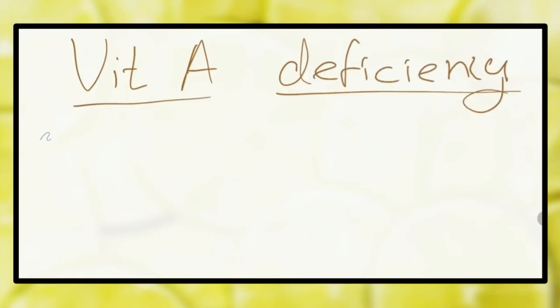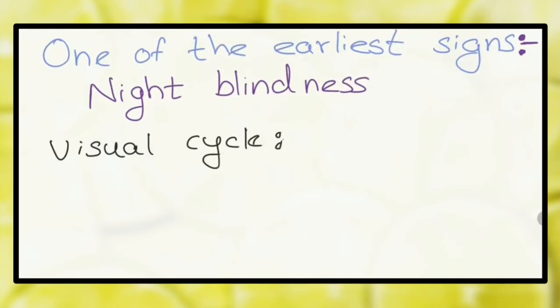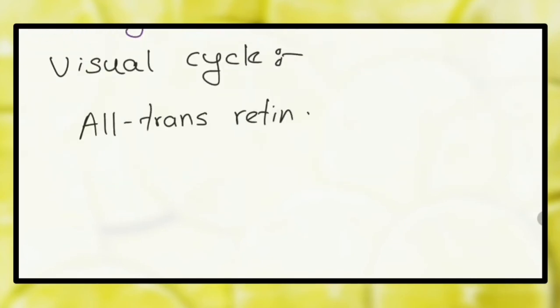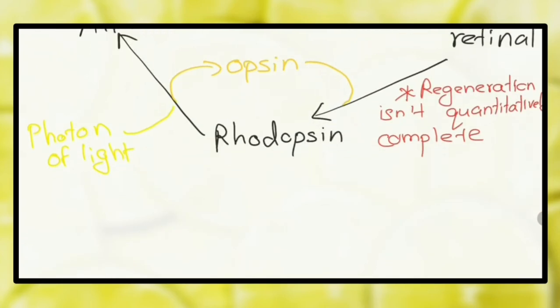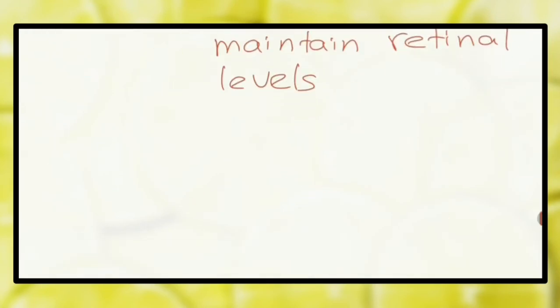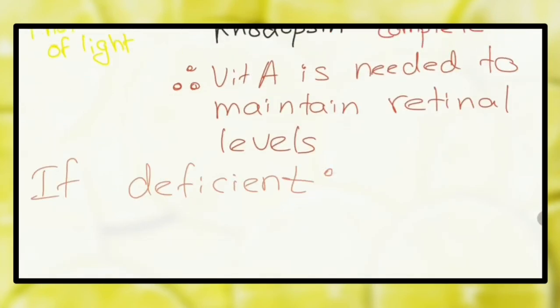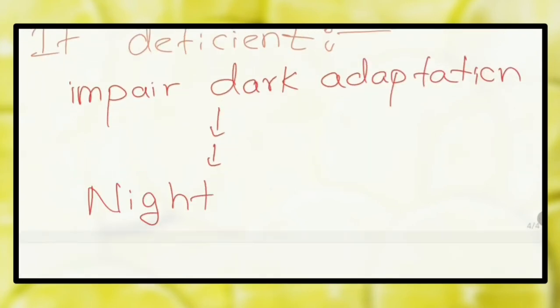Tell me the earliest sign that you can see in vitamin A deficiency. Night blindness. Tell me how night blindness occurs in this condition. Rhodopsin in the cells of retina is responsible for the vision in dim light. As retinol is deficient, regeneration of rhodopsin by isomerization is now impaired. So, sustained vitamin A deficiency impairs the dark adaptation resulting in night blindness.